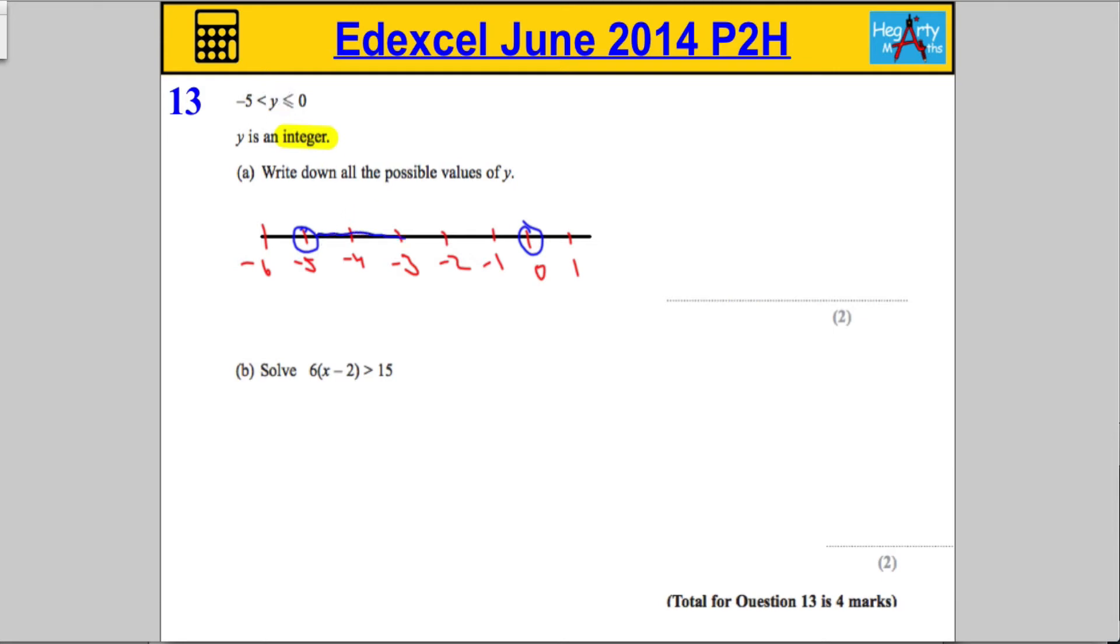It's all the values in here. Are we going to include 0? We are, indeed, because it's less than or equal to. So, I need that one. But it says, don't include negative 5 because there's no little line here. So, what whole number answers could it be?